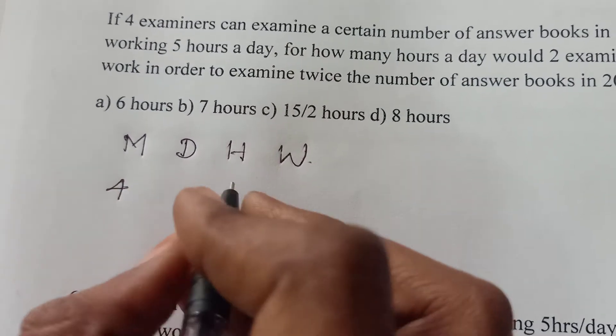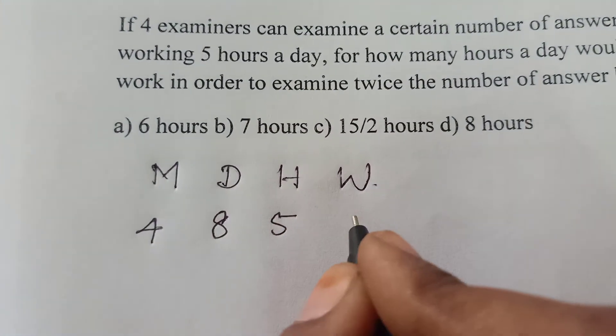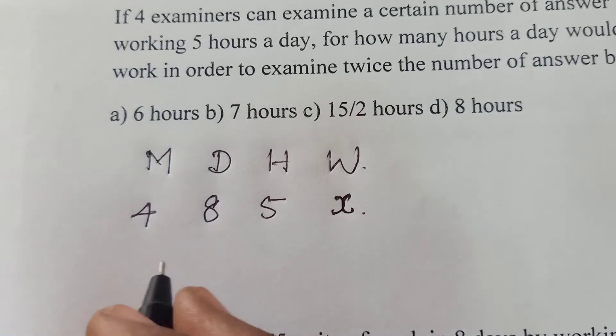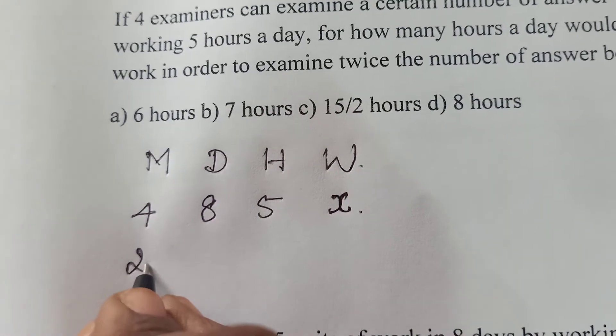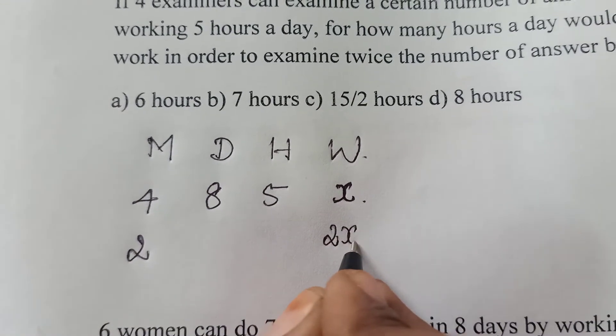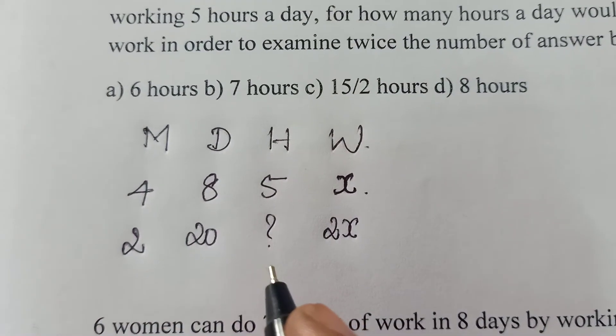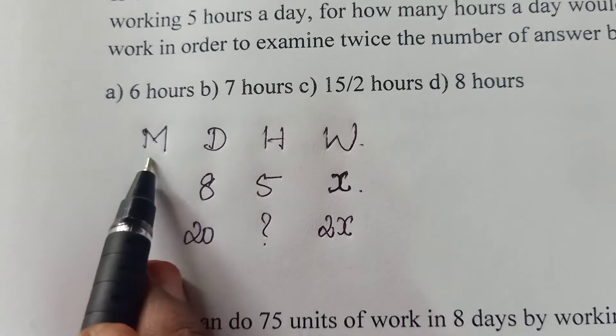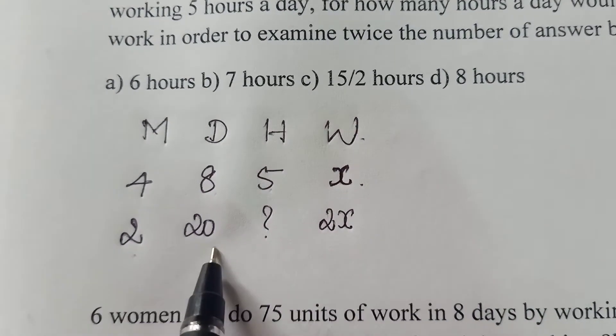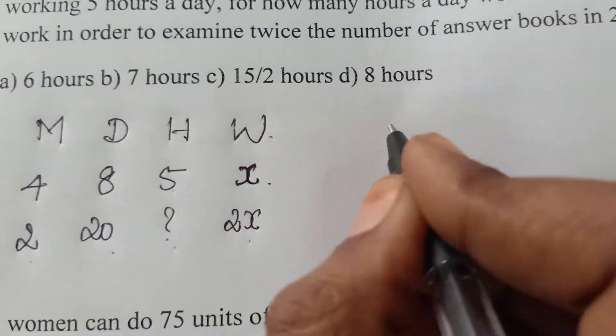4 examiners are working for 8 days. They are working for 5 hours. They are completing that x number of answer books. My question, 2 examiners have to work in order to complete twice the number of answer books in 20 days. So I have to find the number of hours. This is M1 D1 H1 W1, and this is M2 D2. H2 is unknown. This is W2. So just apply it in this formula.